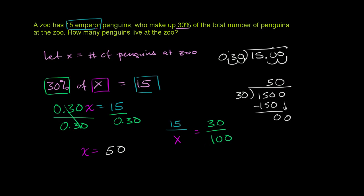And a really simple way of doing this is you say, look, to go from 30 to 15, you have to divide by 2. So let's divide by 2 right over here. So x would be equal to 50. 15 over 50 is the same thing as 30 over 100. So the total number of penguins are 50.